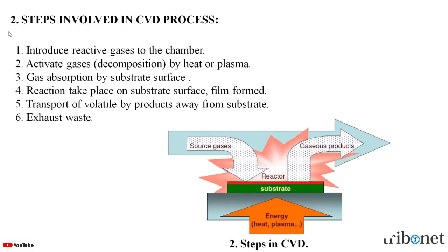Let us understand the steps involved in the chemical vapor deposition process. The first step: introducing the reactive gases to the chamber. In the second step, the gases are activated, that is decomposition by heat or plasma. Third step: gas absorption by the substrate surface. Fourth step: reaction takes place on the substrate surface and the film is formed.